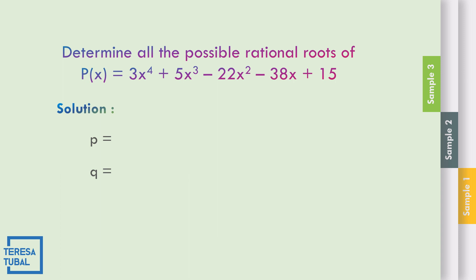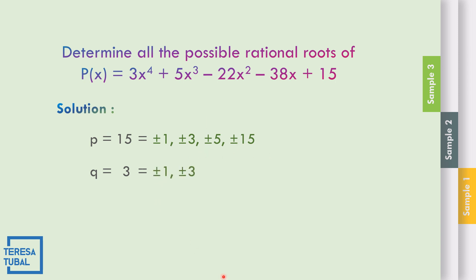Example number 3: Determine all the possible rational roots of P of x equal to 3x to the 4th plus 5x cubed minus 22x squared minus 38x plus 15. The value of the constant is 15, so p equals 15. The value of the leading coefficient q is equal to positive 3. The factors of 15 are positive-negative 1, positive-negative 3, positive-negative 5, and positive-negative 15. The factors of 3 are positive-negative 1 and positive-negative 3.